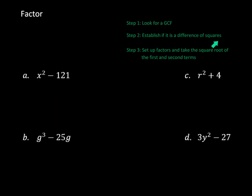Step two is to establish if it's a difference of squares. I'm going to ask myself three questions. The first question: can you take the square root of the first term, x squared? Yes — the square root of x squared is just x. Question two: can I take the square root of the second term? The square root of 121 is 11, so yes. And question three: is there a minus sign between them? Yes.